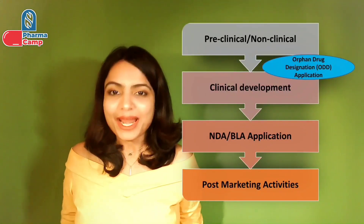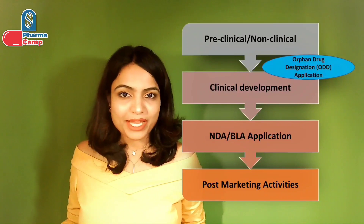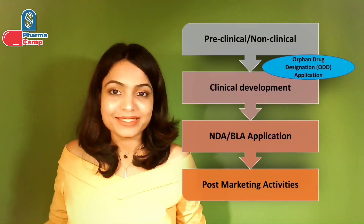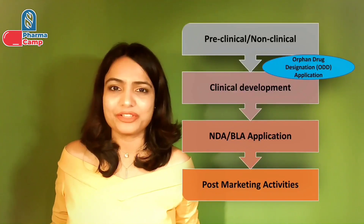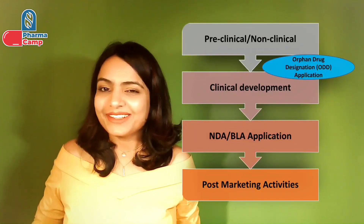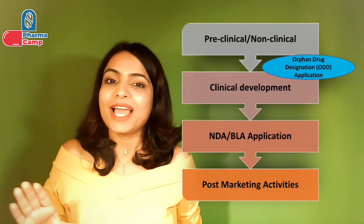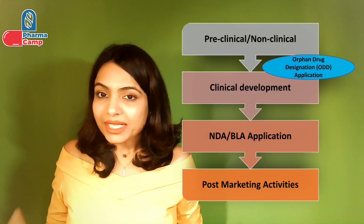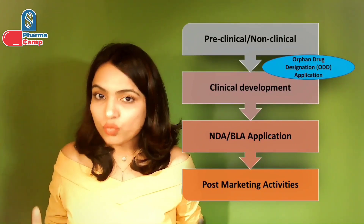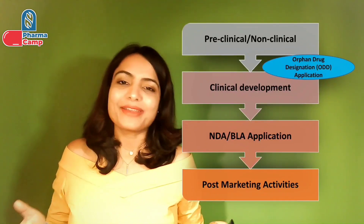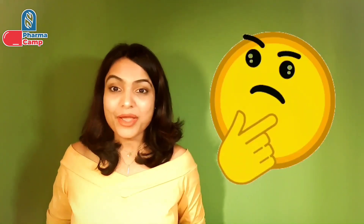On the other hand, NDA, BLA, or MA applications are only submitted when we have completed our clinical studies and want to receive marketing authorization or approval for our drug. That is why getting the orphan drug designation and orphan drug approval are not the same thing. Getting the orphan drug designation is just one part or one step before getting the orphan drug approval or marketing authorization approval.